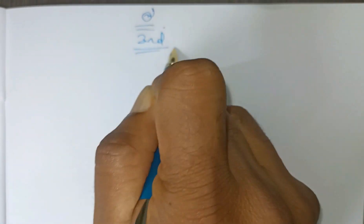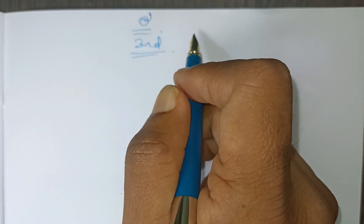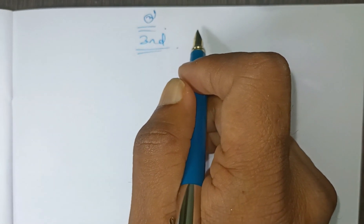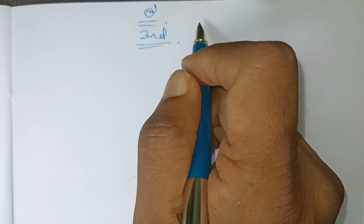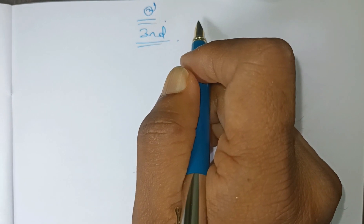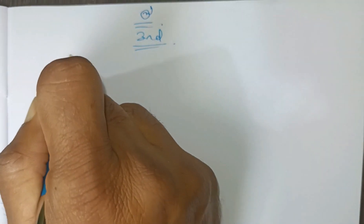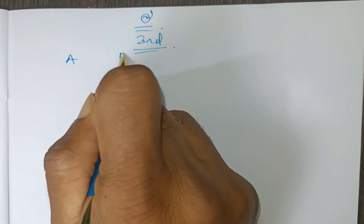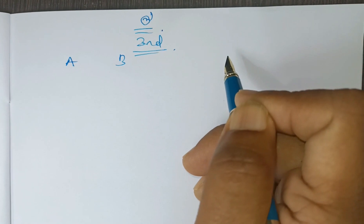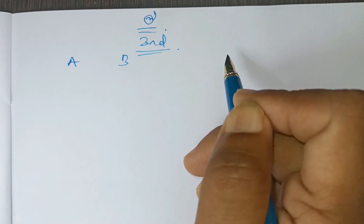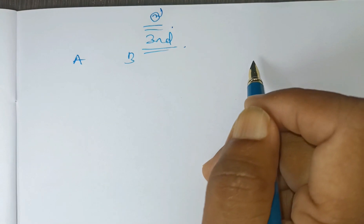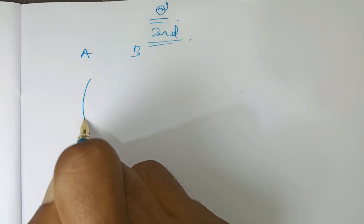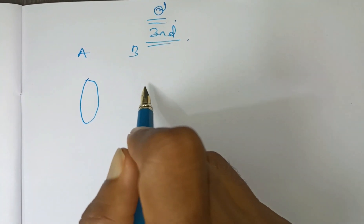Ladies and gentlemen, this is our third video on countability of sets. Here we shall study how the type of function or mapping relating to sets A and B is concerned with the comparison of potential of these two sets. Let us take some examples here.